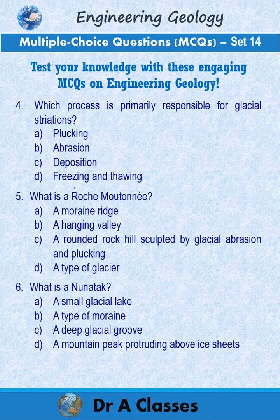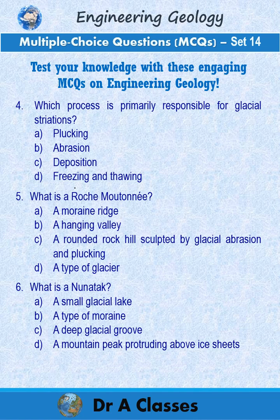Question 5: What is a roche moutonnée? A. A moraine ridge. B. A hanging valley. C. A rounded rock hill sculpted by glacial abrasion and plucking. D. A type of glacier.